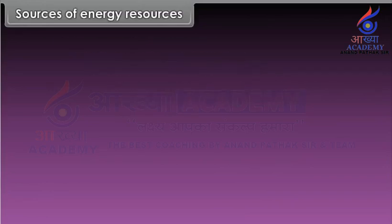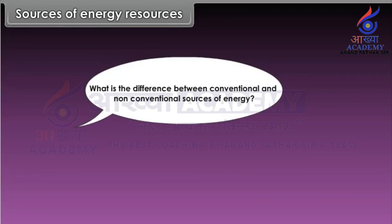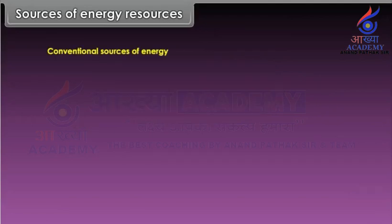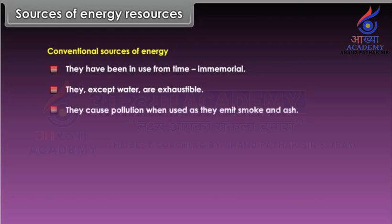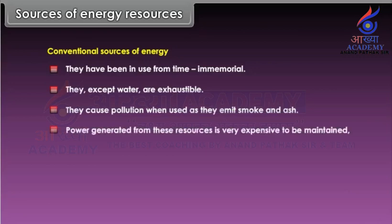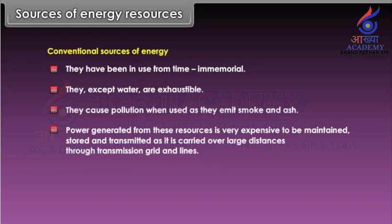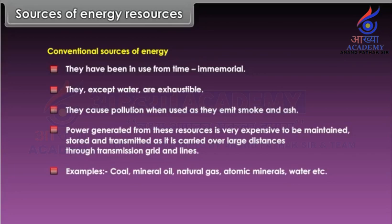Sources of energy resources. Conventional sources of energy have been in use from time immemorial. They are exhaustible, except water. They cause pollution when used as they emit smoke and ash. Power generated from these resources is very expensive to maintain, store and transmit as it is carried over large distances through transmission grids and lines. Examples: coal, mineral oil, natural gas, atomic minerals, water, etc.